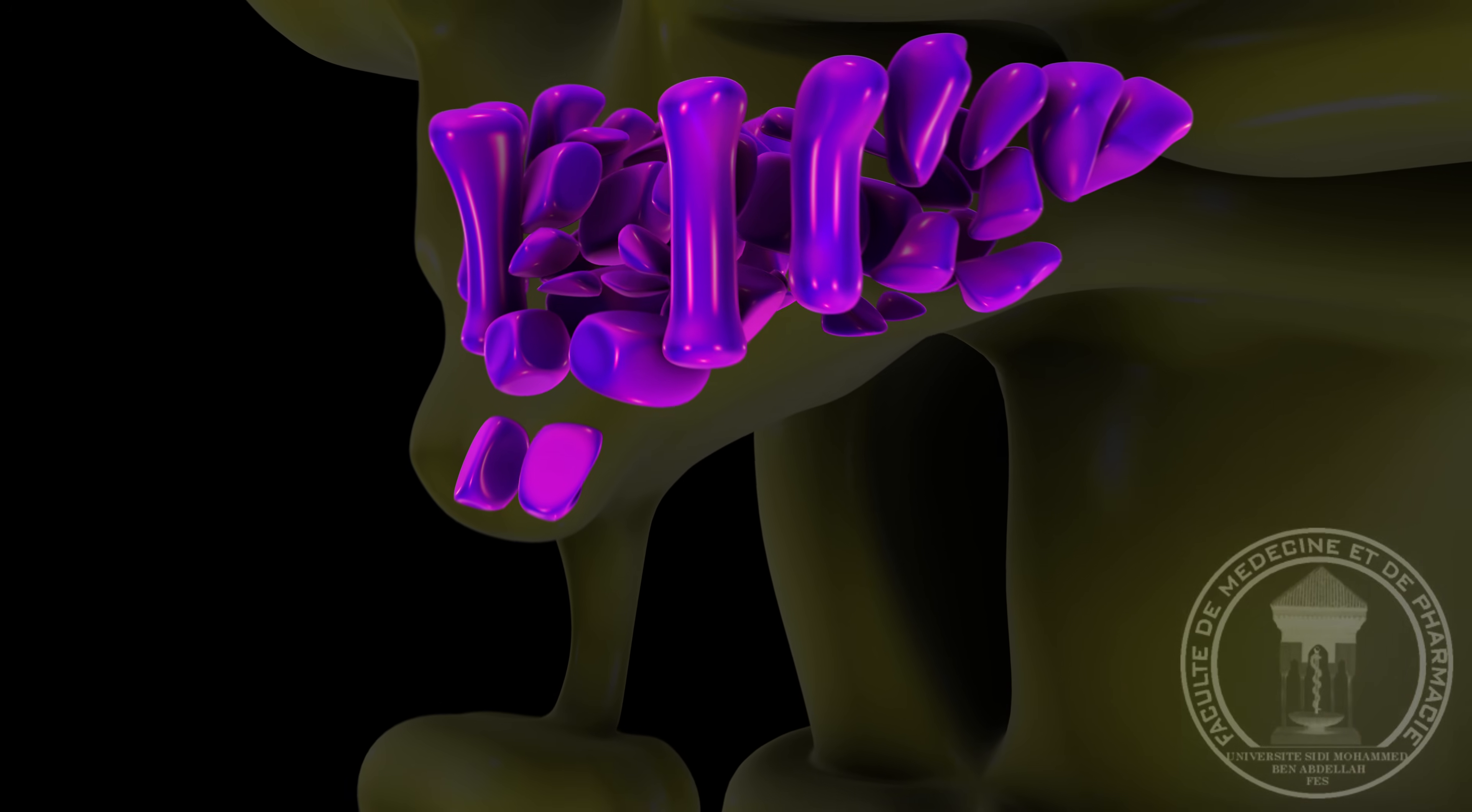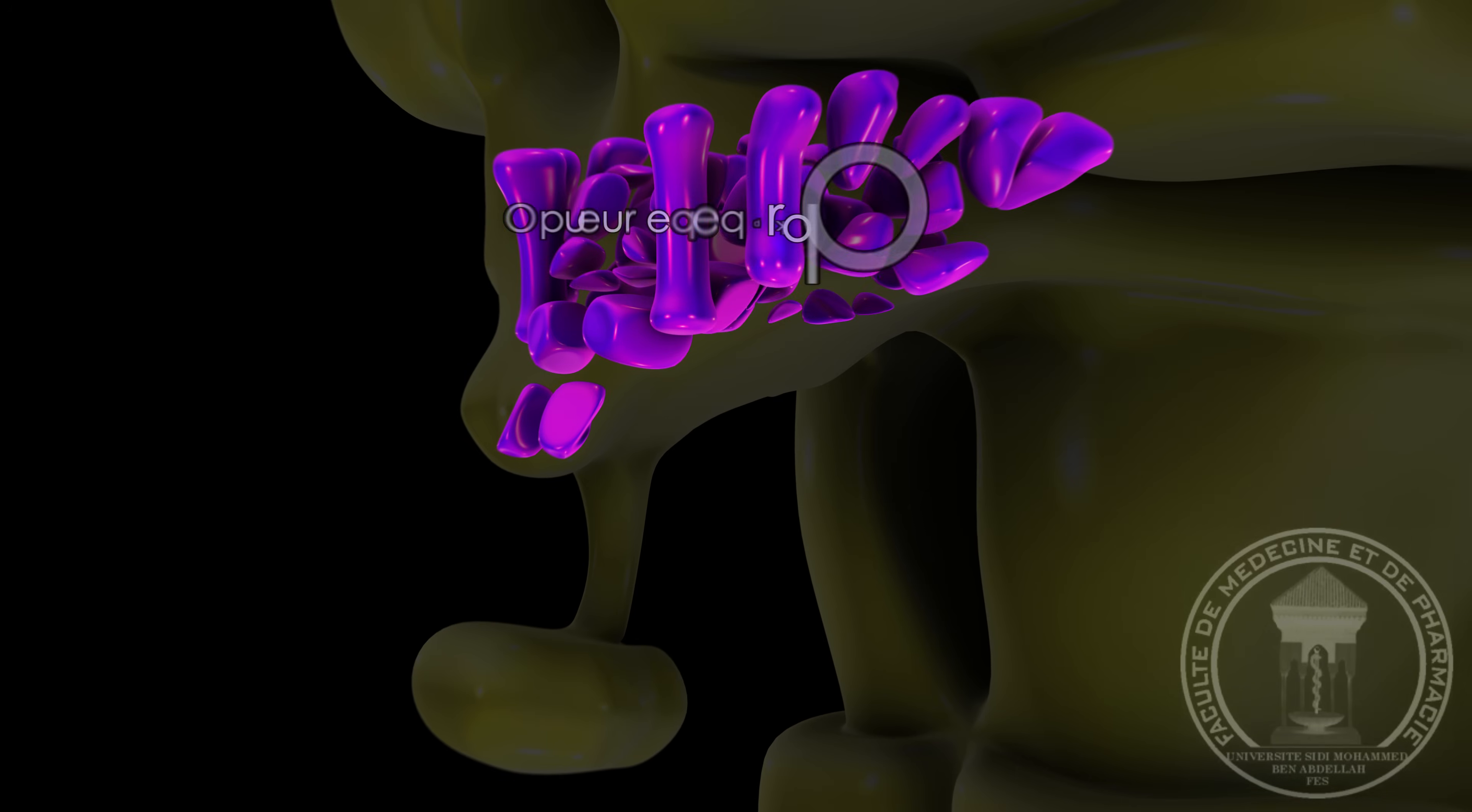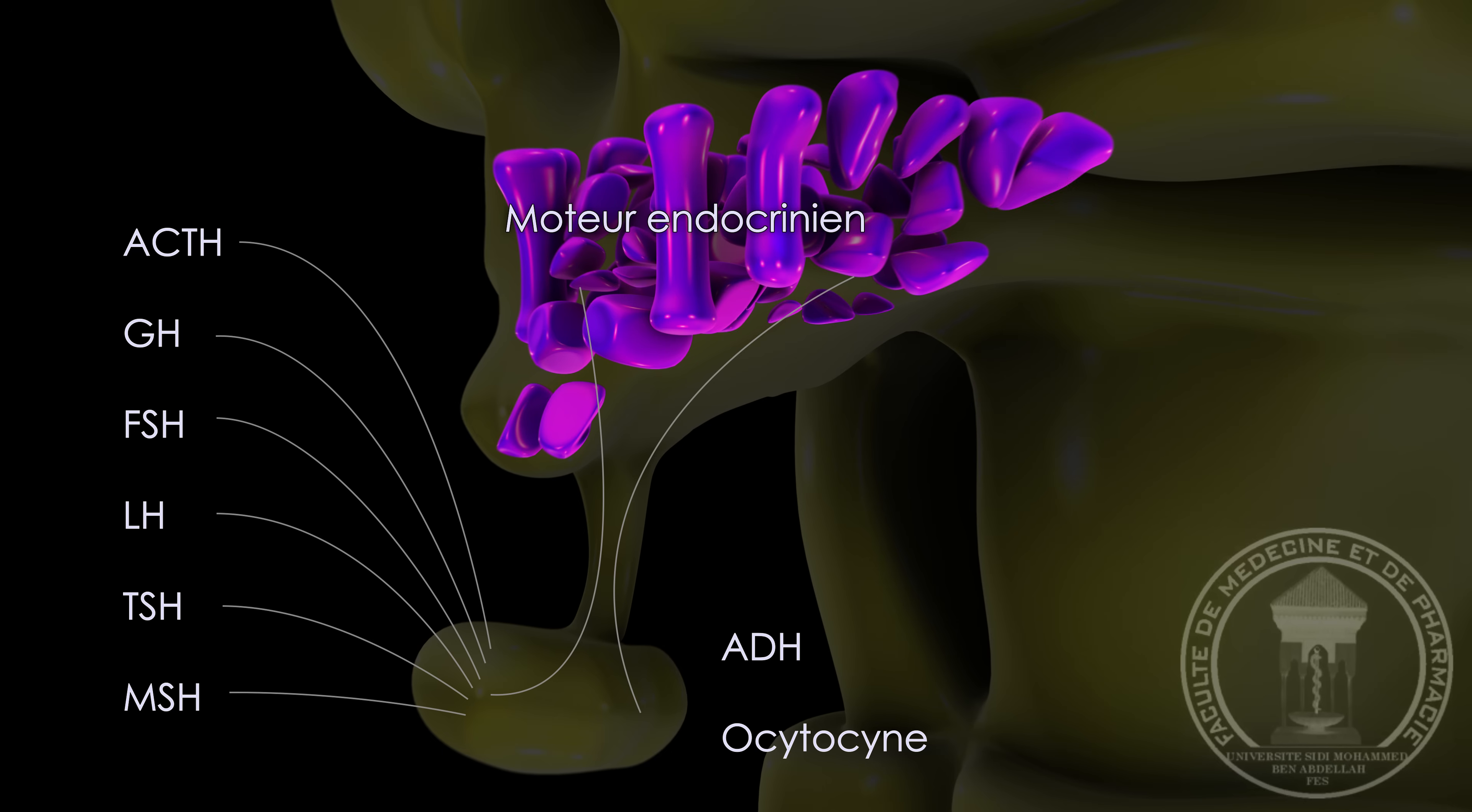L'hypothalamus est le véritable moteur endocrinien de tout le corps. Il contrôle la sécrétion de l'hypophyse qui produit les principales hormones de l'organisme.